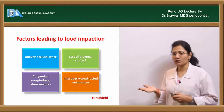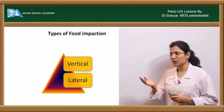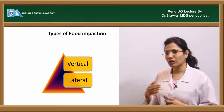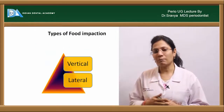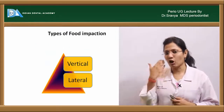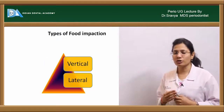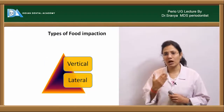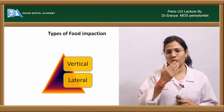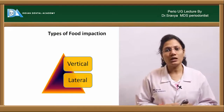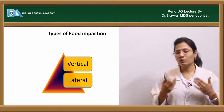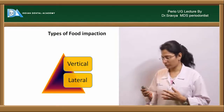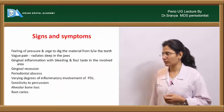The lateral food impaction is mainly caused by surrounding tissues, either from forces from the tongue, forces from the cheeks, or forces from the lips. That is what is called lateral food impaction.